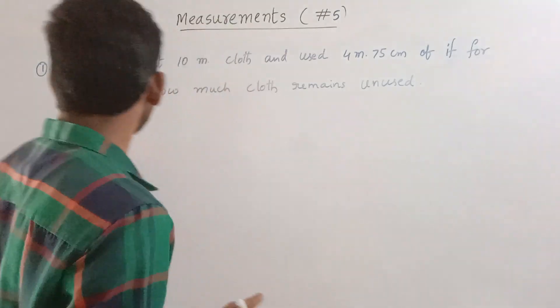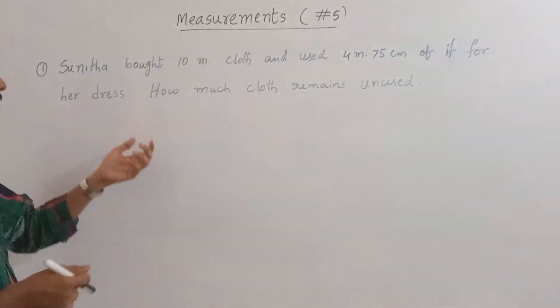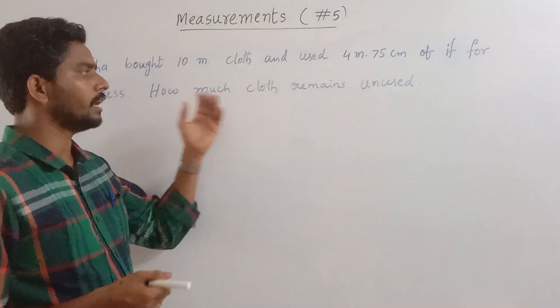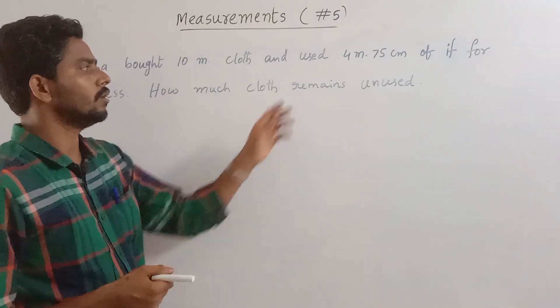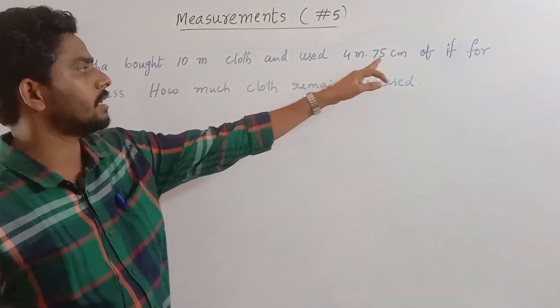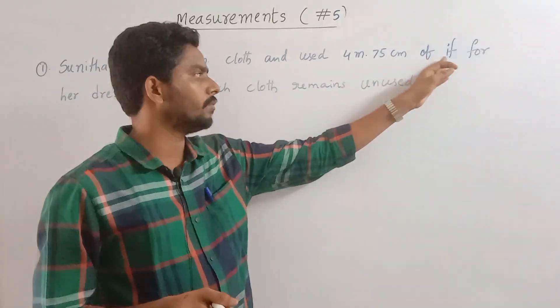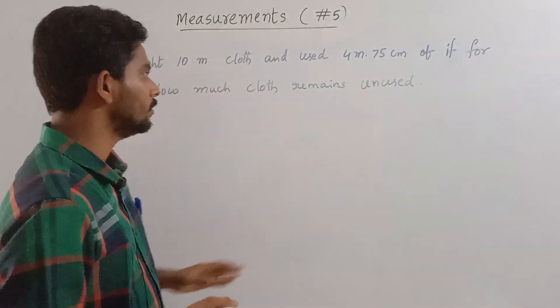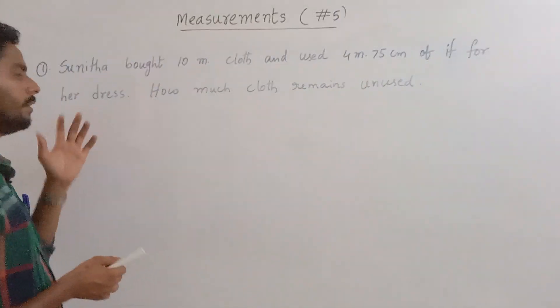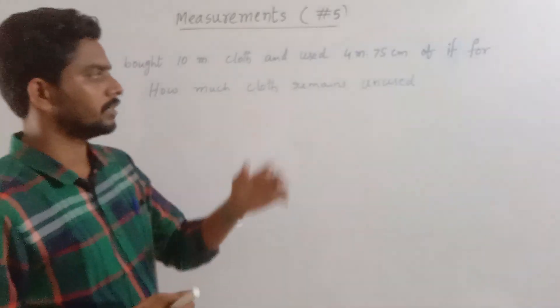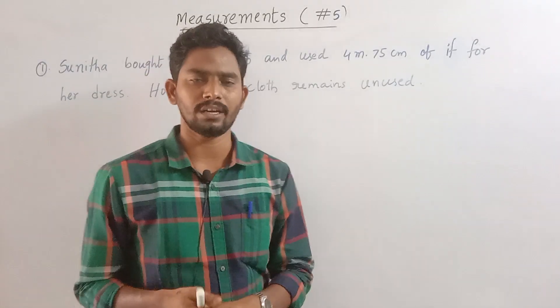Sunita bought 10 meters of cloth and used 4 meters 75 centimeters of it for a headdress. How much cloth remains unused?